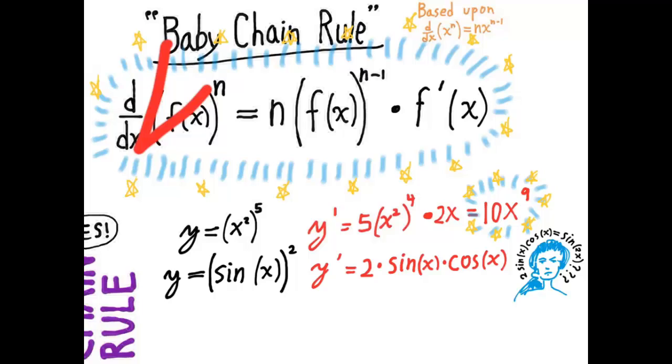One last example, suppose we had the function y equals the square root of 1 plus x squared. Well, this is the same as 1 plus x squared to the 1 half power. And therefore, since the derivative of x to the 1 half is 1 half x to the negative 1 half, we have derivative of 1 plus x squared to the 1 half is 1 half times 1 plus x squared to the negative 1 half.